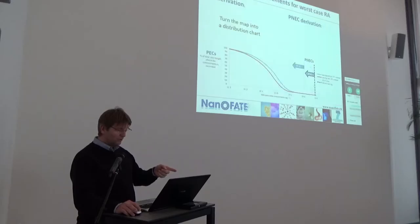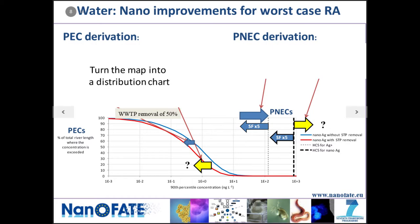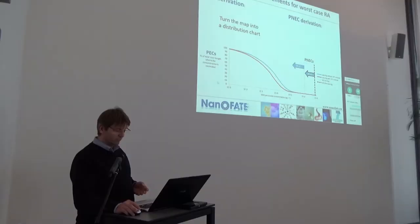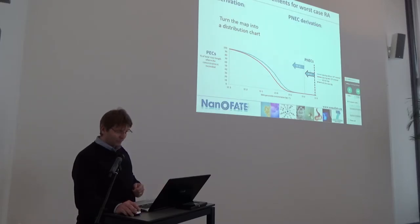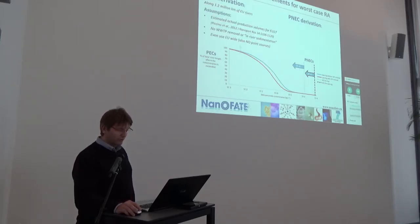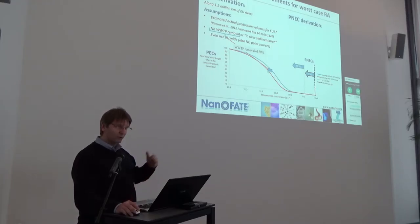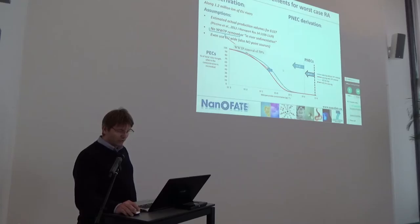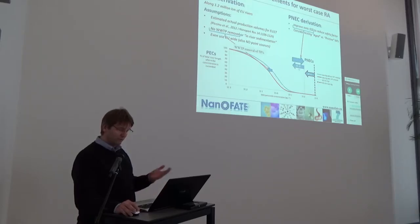If we take these maps and turn them into frequency distributions — the percentage of EU river kilometres exceeding a predicted concentration — most of them exceed the concentration limit. We can then examine our assumptions: we assumed no removal in wastewater treatment. If you assume 50% removal, the exposure concentration drops by 50%; assume 99% removal and it moves back considerably. On the hazard side, we could improve our data so we don't need such high safety factors on our estimates.